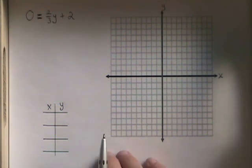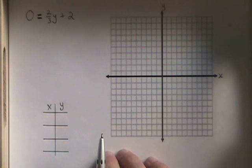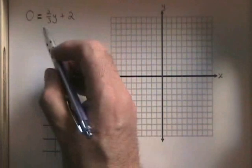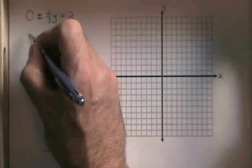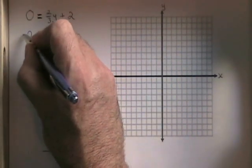In this equation, we have 0 equals 2 thirds y plus 2. Let's isolate the y. If I move the 2 to the other side of the equals, it becomes negative 2.